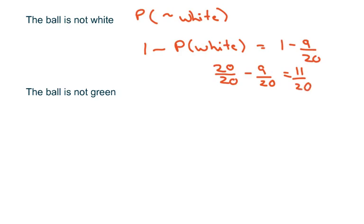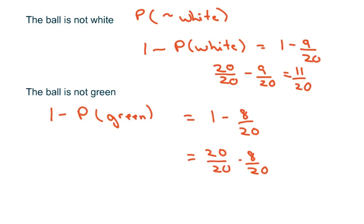And the probability that it's not green would be 1 minus the probability of green, which is going to be 1 minus 8 over 20. So that's 20 over 20 minus 8 over 20, which equals 12 over 20, which again reduces to 3 over 5.